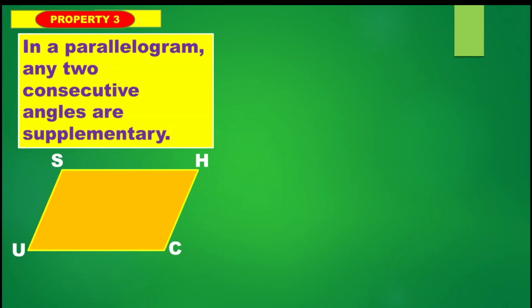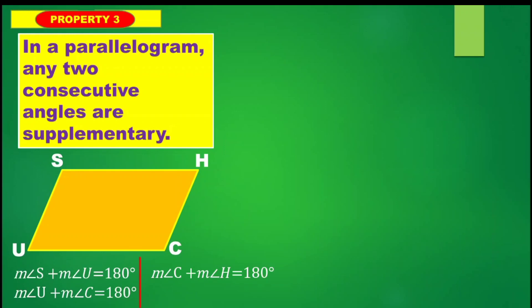Same thing with angle S and angle U, where the measure of angle S plus the measure of angle U is equal to 180 degrees. The measure of angle U plus the measure of angle C is equal to 180 degrees. And the measure of angle H plus the measure of angle S is also equal to 180 degrees.